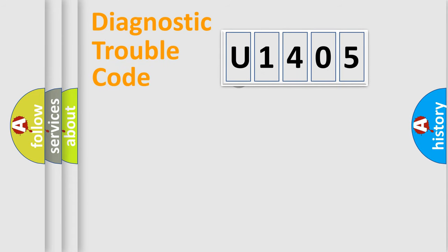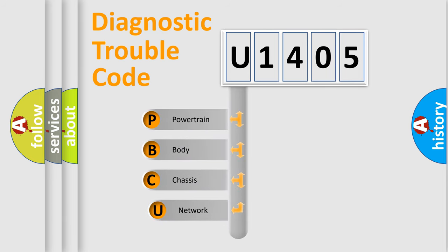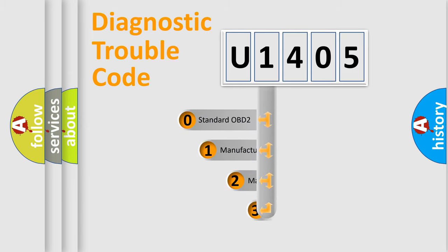First, let's look at the history of diagnostic fault code composition according to the OBD2 protocol. We divide the electric system of an automobile into four basic units: powertrain, body, chassis, and network. This distribution is defined in the first character of the code.